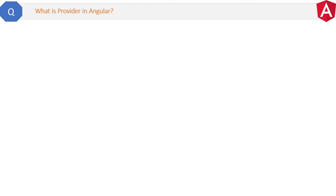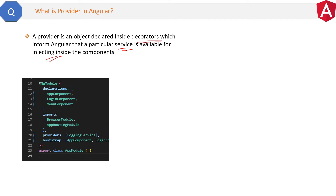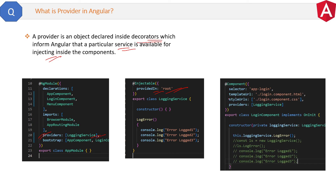This is a revision question: what is a provider in Angular? A provider is an object declared inside decorators that informs Angular that a particular service is available for injecting inside the components. We can set providers at three levels: first, at the module level inside the NgModule decorator — the service is available to the module's components. Second, at the application root level inside the service's @Injectable decorator — the service is available to all application components. Third, at the component decorator level — the service is available to that particular component and its child components.